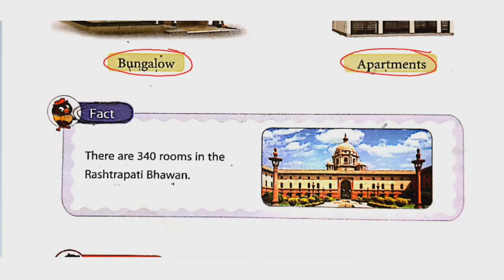Now let's see one interesting fact. See this picture — yeh kya hai? This is Rashtrapati Bhavan. Kahaan pe hai hamaara Rashtrapati Bhavan? Delhi mein. There are 340 rooms in the Rashtrapati Bhavan — matlab 340 rooms hain usmein.